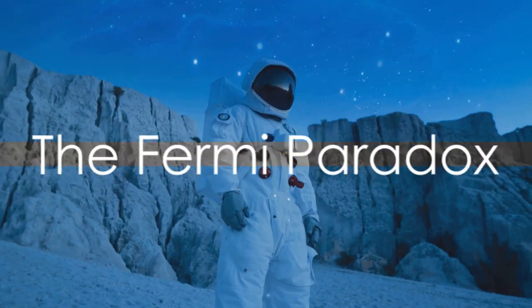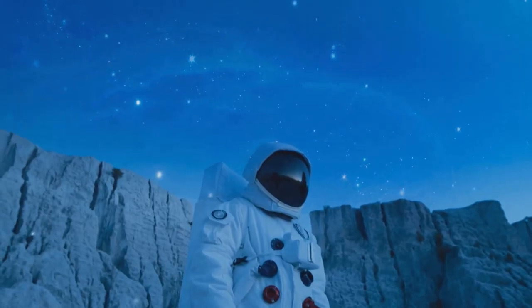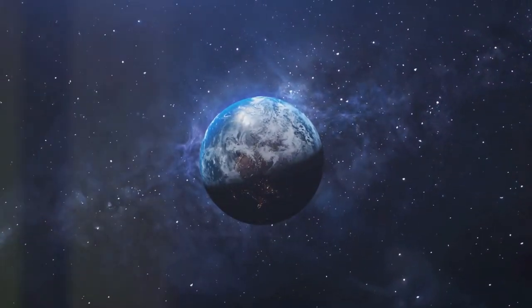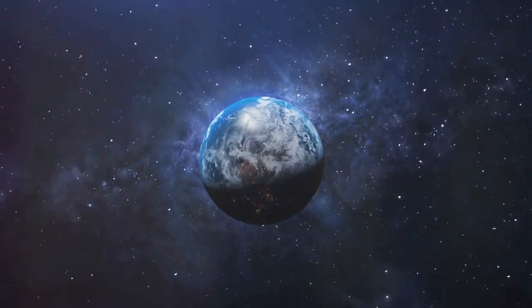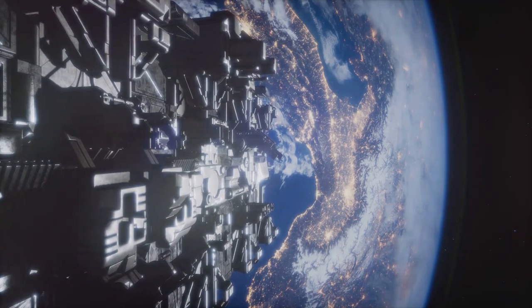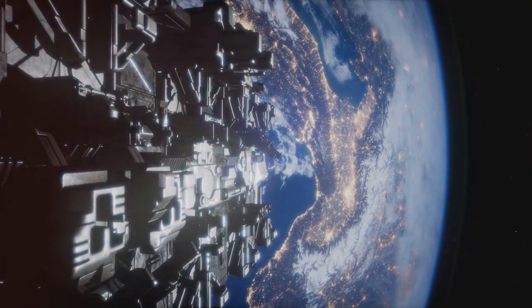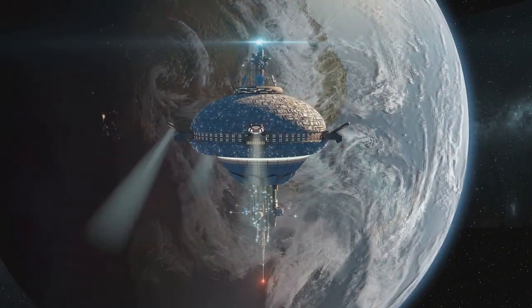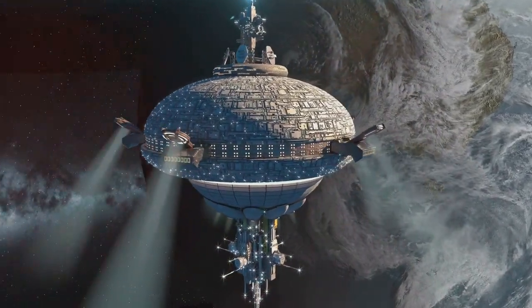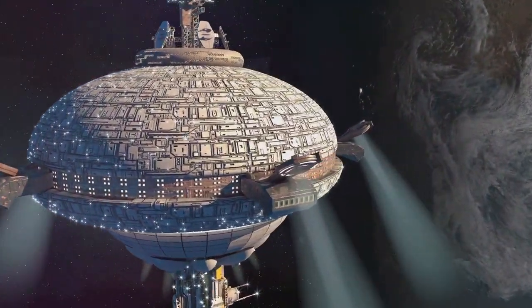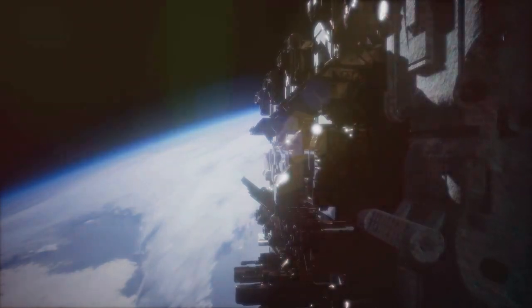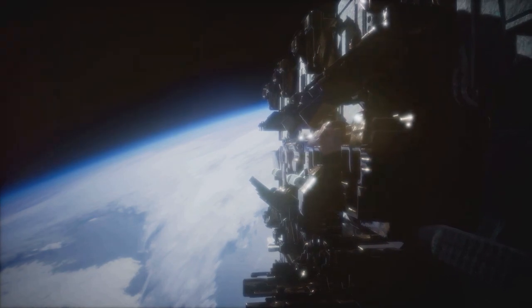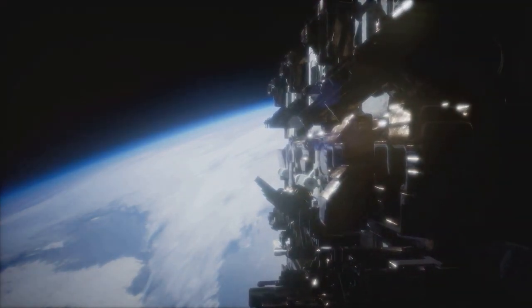At Number 3, the Fermi Paradox. Let's delve into this fascinating conundrum. The universe is vast, with billions upon billions of stars, each potentially hosting planetary systems similar to our own. Given the sheer scale, it's statistically likely that life, perhaps even intelligent life, exists somewhere out there. Yet, despite our best efforts and advanced technologies, we have found no concrete evidence of extraterrestrial life. No signals, no spacecraft, not a single alien selfie. This puzzling contradiction is known as the Fermi Paradox, named after physicist Enrico Fermi.